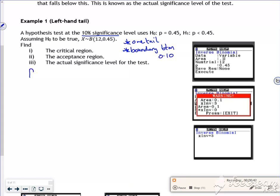So what I'm saying is the probability that X is less than or equal to, let's call it the critical value, is equal to 0.1. So I do inverse binomial, set the area as 0.1, num trials is 12, P is 0.5, you get an area, I get a warning, then just press exit and it tells you it's three.